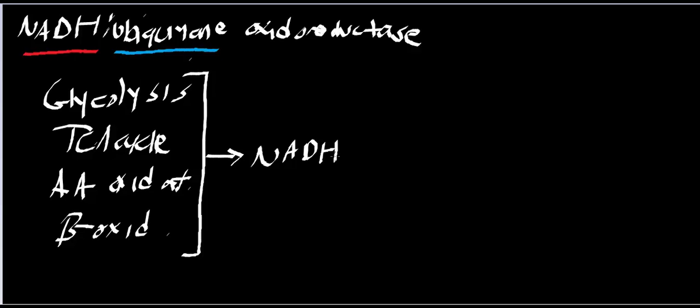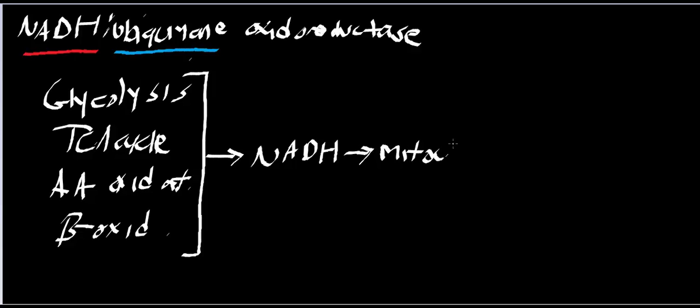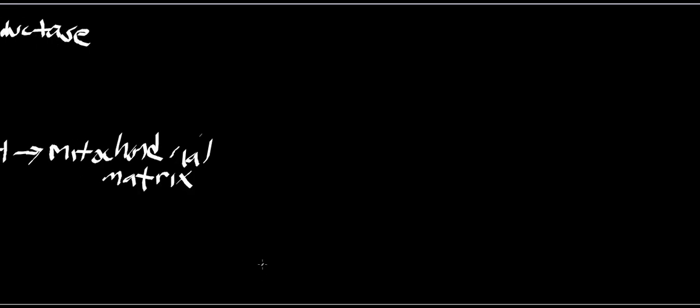The NADH that is produced is going to be transported into the mitochondrial matrix, where it will be oxidized by the first enzyme in the respiratory chain — NADH-ubiquinone-oxidoreductase. What I want to be perfectly clear about with this enzyme is that it contains multiple prosthetic groups.